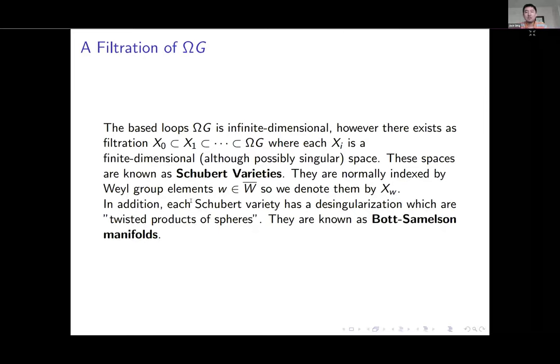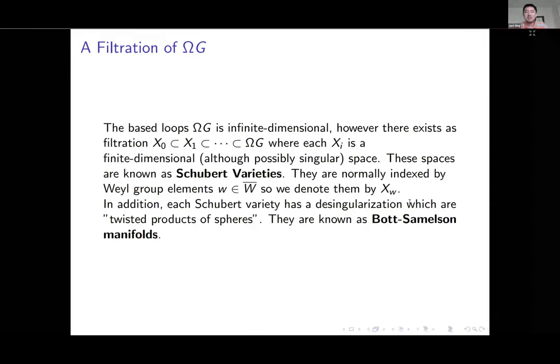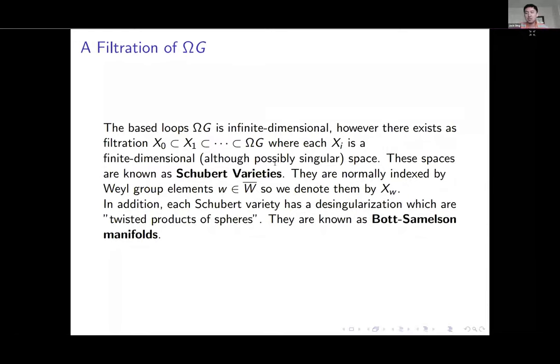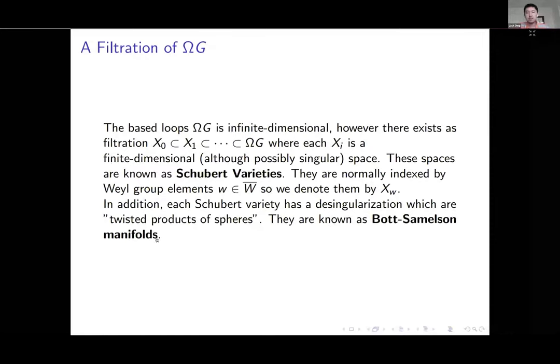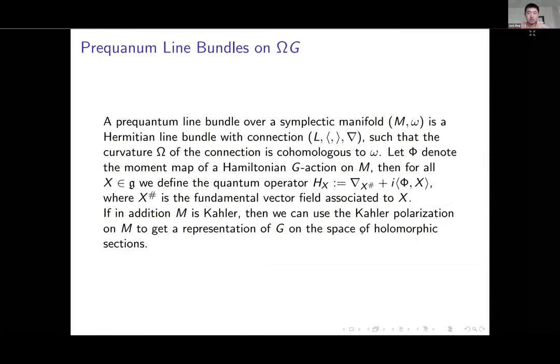We have X₀, X₁, and so on, where their union equals ΩG, and each one of these is a finite dimensional space. These spaces are called Schubert varieties. The second difficulty is that Schubert varieties are generally singular. In the case of Ω SU(2), only the simplest one, the two-dimensional one, is actually smooth. Everything else is singular. But we are saved by the fact that each Schubert variety has a well-known desingularization.